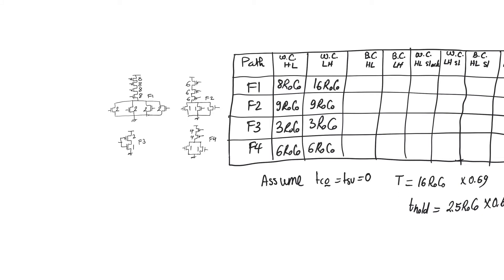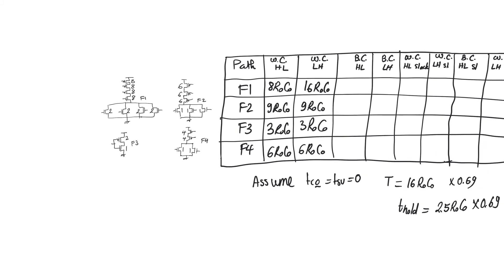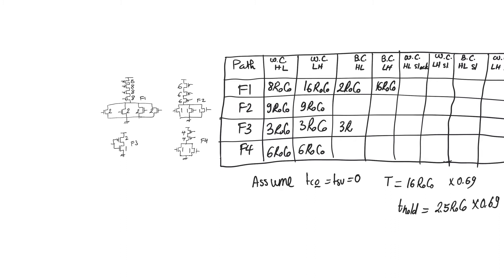Now let's look at the best case high-to-low and low-to-high delays. For F1, the capacitance is still 16 C0, but the best case delay happens when all four branches are activated in the pull-down network. Therefore the best case high-to-low delay has resistance R0/8, giving us 2 R0C0. In low-to-high, we still have 16 R0C0 because there is only a single branch in the pull-up network, so the worst case equals the best case.